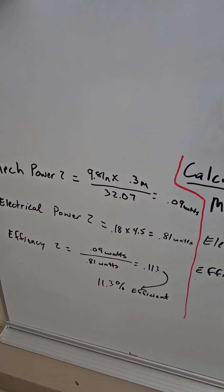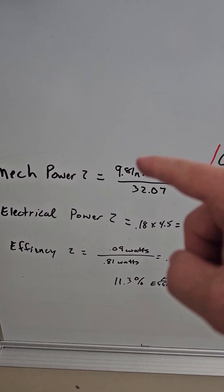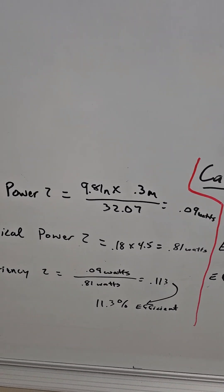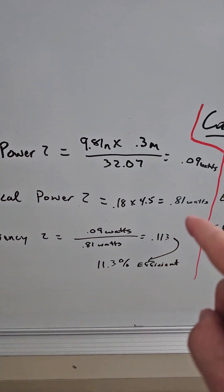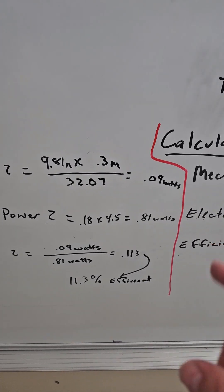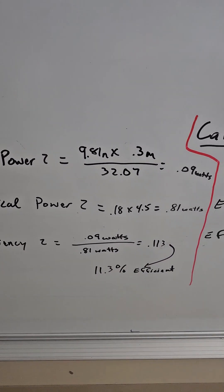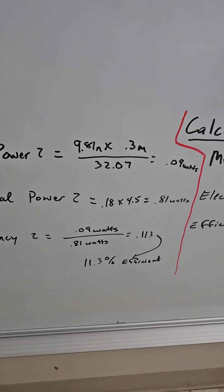If we do the same process here with the thousand gram weight, we just plug those numbers in. We have our mechanical power formula: force times distance divided by time gives us 0.09 watts. Then we have electrical power, again current times voltage, gives us 0.81 watts. Then we have our efficiency: 0.09 divided by 0.81 gives us about 11 percent efficient for that particular weight.